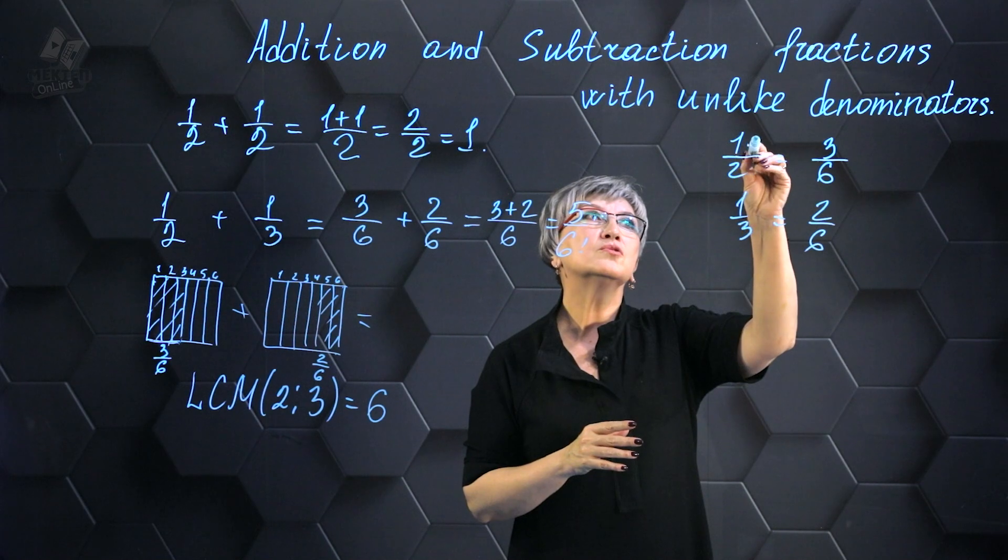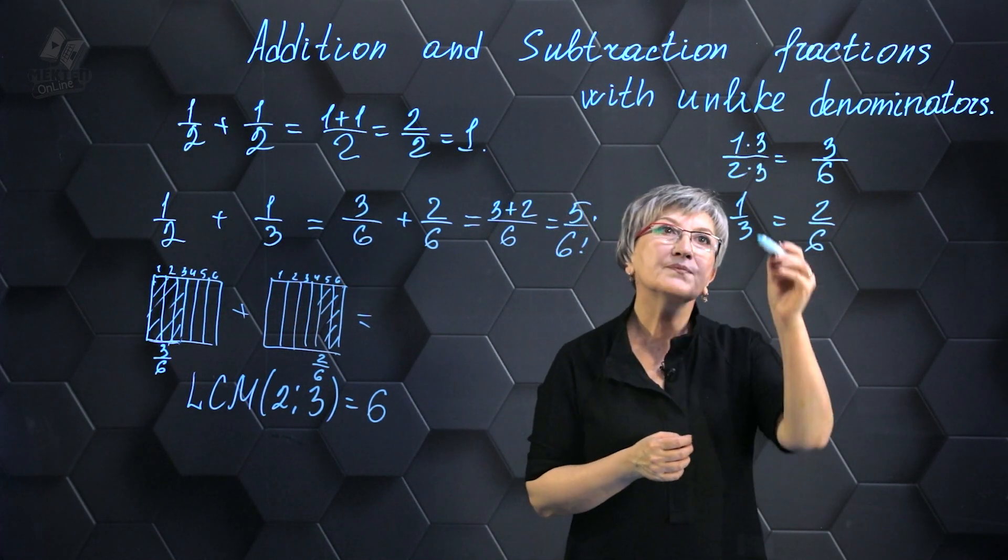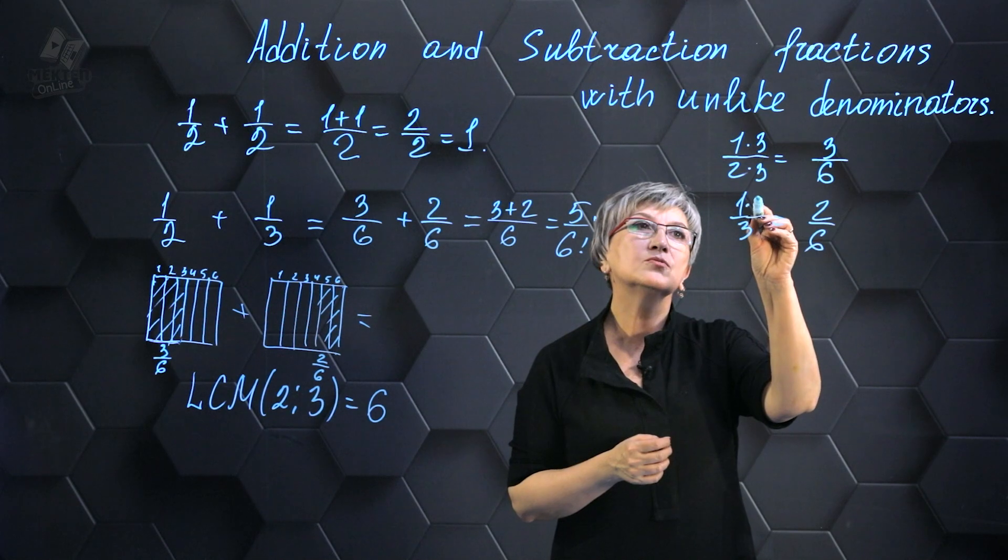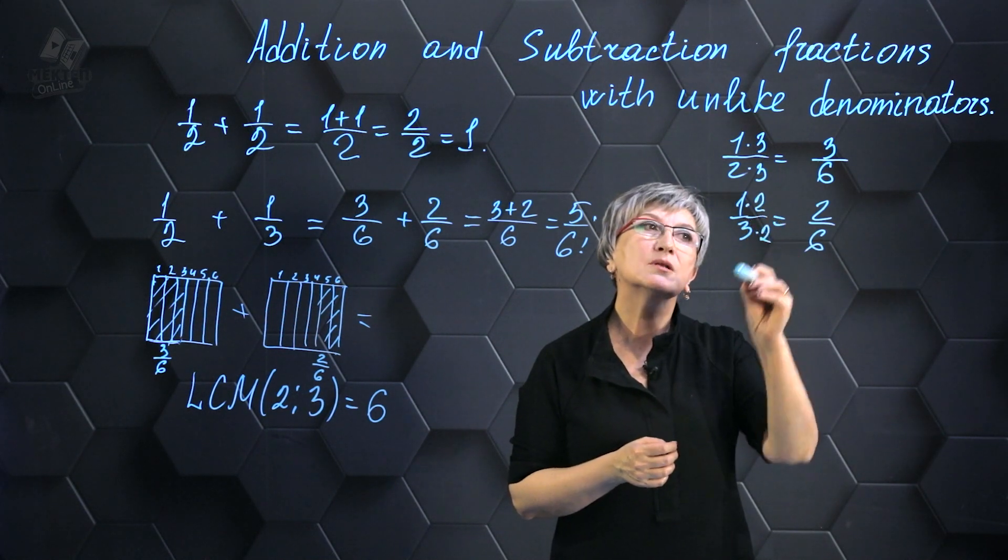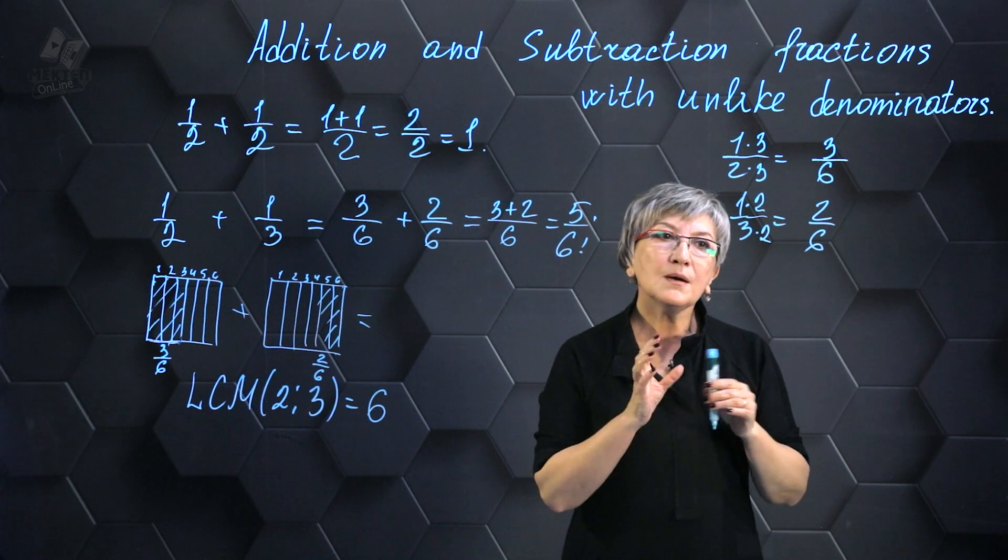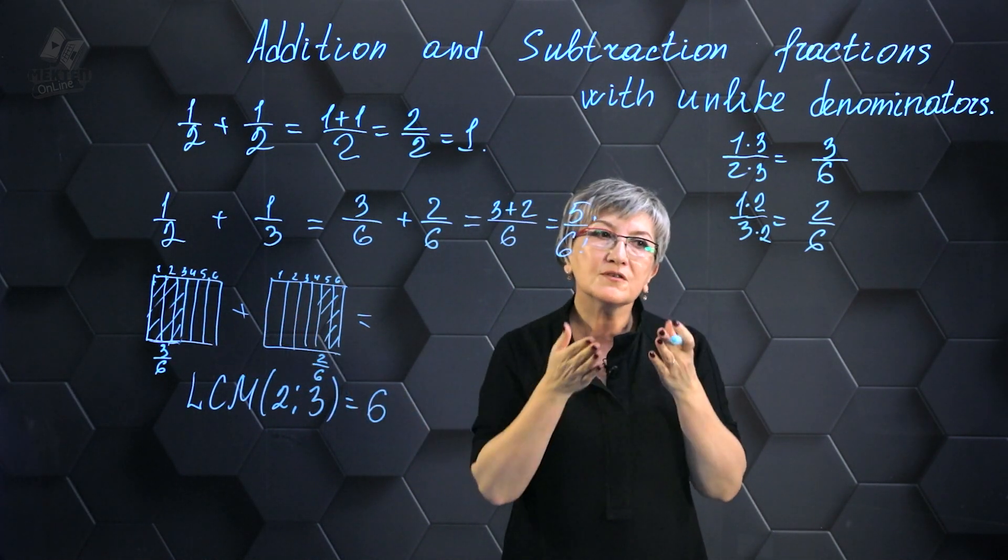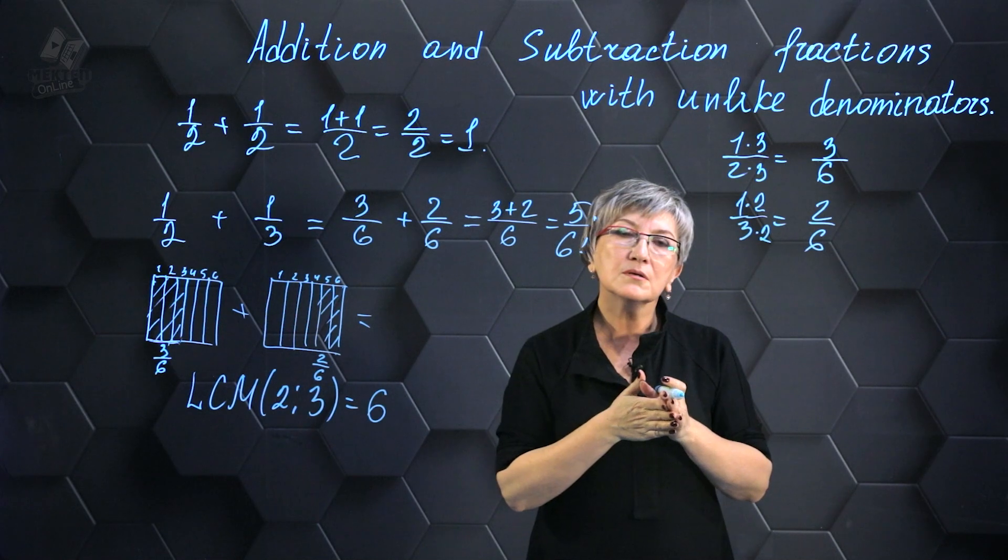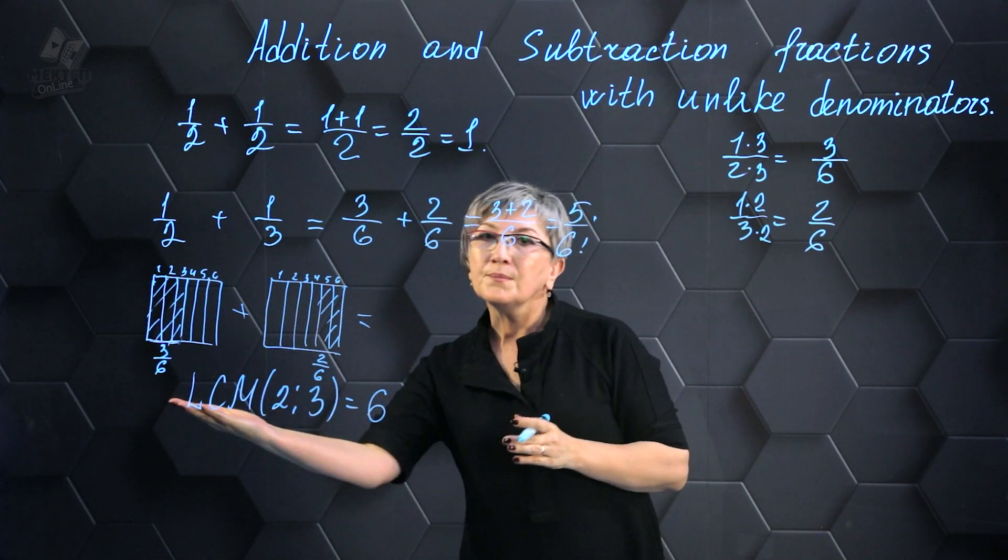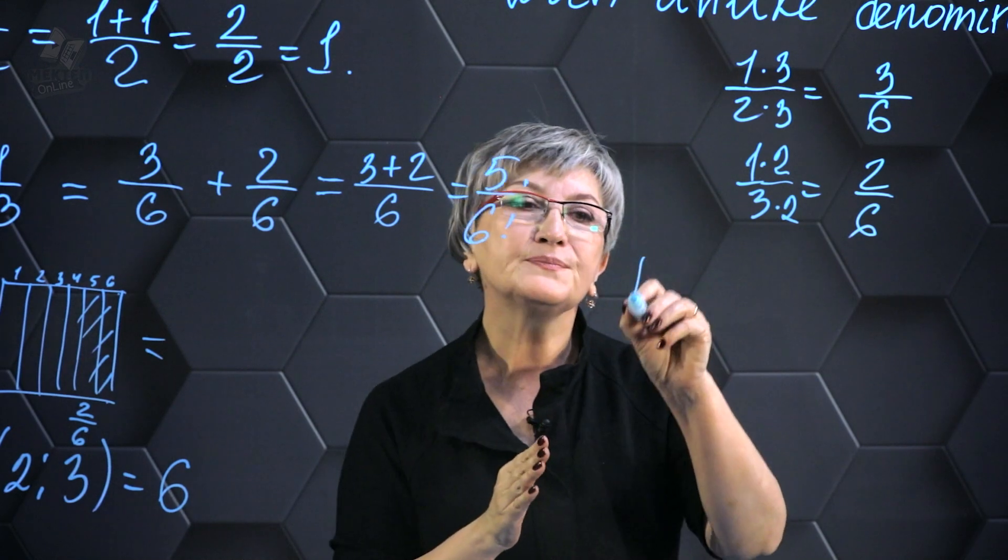If I multiply 1 by 3 and 2 by 3, I get 3/6. If I multiply 1 by 2 and 3 by 2, the outcome is 2/6. We must determine the number of equal parts I require to divide it into. And that is when the least common multiple comes in handy for us.